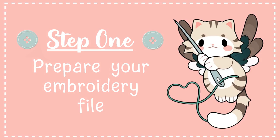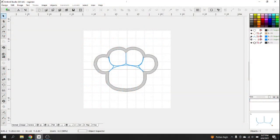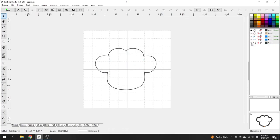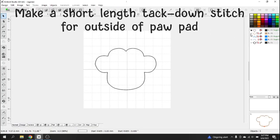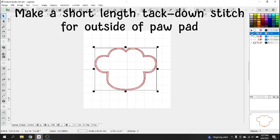If you're using an embroidery machine, start by designing your paw pads in your embroidery program. You can either do a gathered look or you can do a separated look. First, create an outline of where the paw pad will go. This can just be a long length basting stitch. Then you make a tack down stitch for the outside of the paw pads.